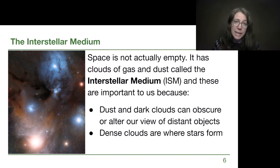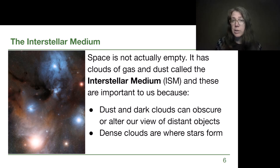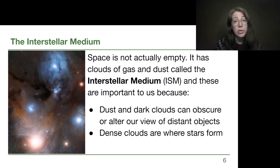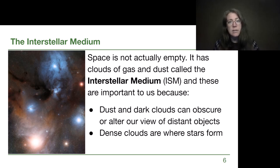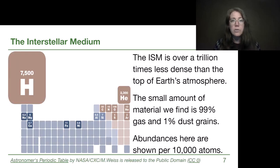The interstellar medium is all of the material in space. Although we tend to think of space as empty, and it certainly is more empty than the tightest vacuum we can make on Earth, there are still clouds of gas and dust. Dust is a term astronomers use for any complex molecules, and these can obscure or change our view of distant objects. The densest clouds of material in the ISM are where stars form. I'll be using the acronym ISM, and I encourage you to write that in your notes to save some time.